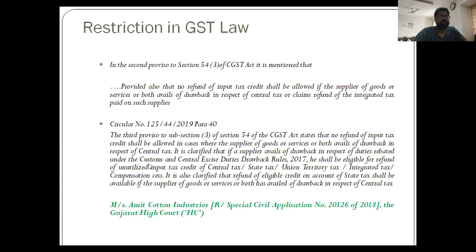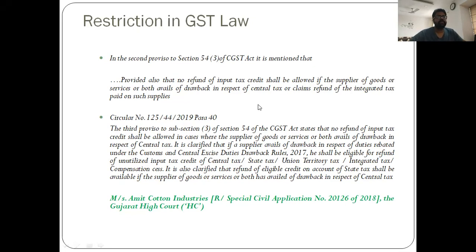This position was confirmed by Circular 125/2019, which states in para 40 that the third proviso to Section 54(3) of the CGST Act prohibits refund of ITC where the supplier avails drawback in respect of central tax. It clarifies that if a supplier avails drawback in respect of duties rebated under the Customs and Central Excise Duty Drawback Rules 2017, he shall be eligible for refund of unutilized ITC of CGST, SGST, UTGST, IGST, and compensation cess. It is also clarified that refund of eligible credit on account of state tax shall be eligible if the supplier has availed drawback in respect of central tax.